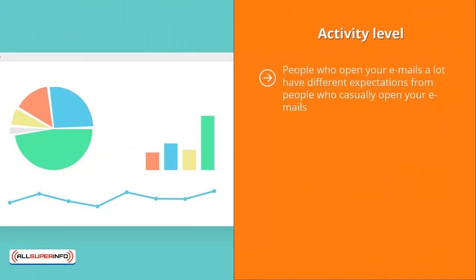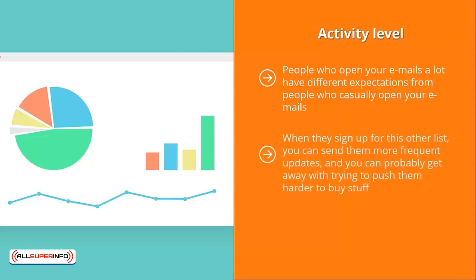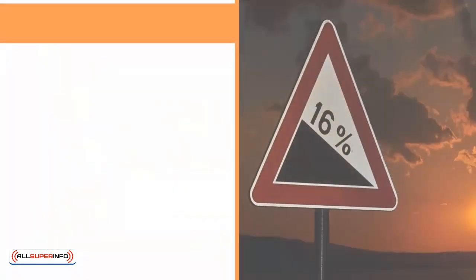Activity level: People who open your emails a lot have different expectations from people who casually open your emails. For people who are very big fans of your mailing list, you might want to ask them to sign up for another list in exchange for a reward. When they sign up for this other list, you can send them more frequent updates and probably get away with pushing them harder to buy stuff — they probably wouldn't mind because they already made it a habit to open and read your emails. Less frequent openers can remain on your main list and receive updates at regular intervals.